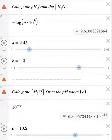it will calculate and display right here the hydronium ion concentration that's equivalent to a solution with a pH of 10.2. That's pretty easy to do.